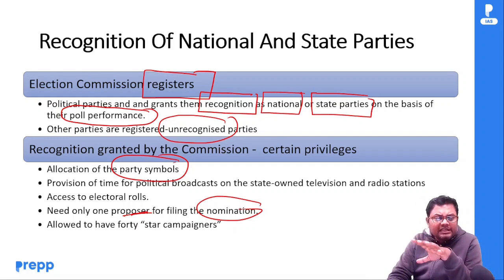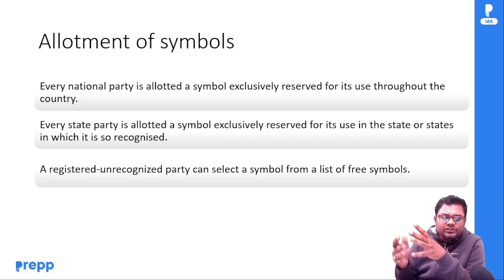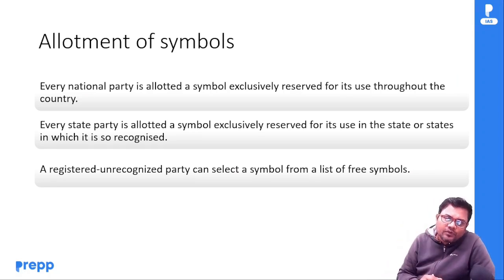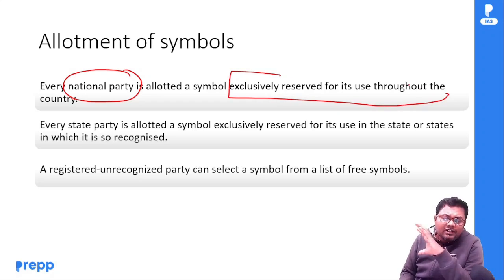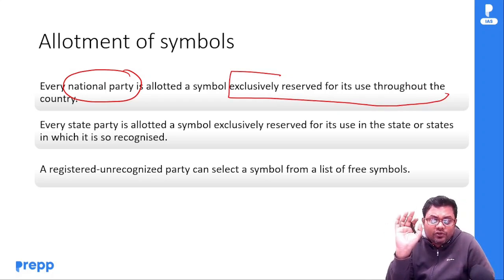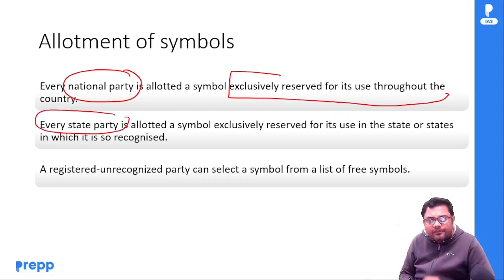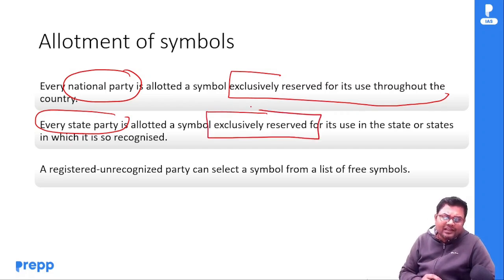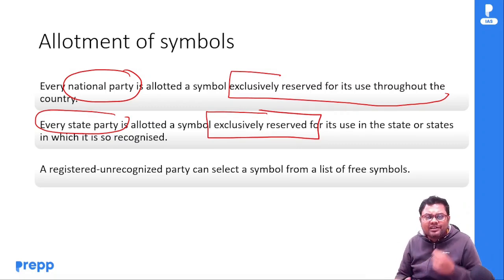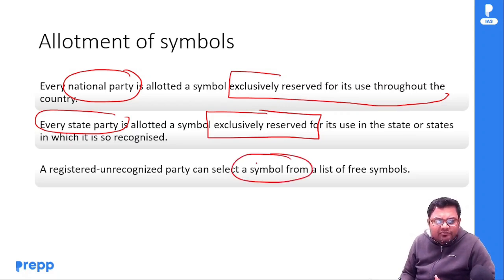Allocation of party symbols ke bare mein: kuch symbols reserved hote hain. National parties ko jo symbol allot hota hai, woh exclusively throughout the country unke liye reserved rahta hai. State parties ko bhi symbol milta hai jo unke recognized states mein exclusively reserved rehta hai. Registered unrecognized parties ke liye free symbols hote hain, jinmein se koi bhi select kar sakte hain.